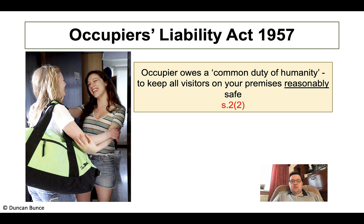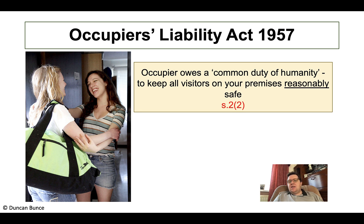Starting with the 1957 Act, the starting point is what is often called the common duty of care. Because this law is statutory, you need to be aware of section numbers. Under Section 2, Subsection 2 of the 1957 Act, this common duty simply means the defendant has to keep all visitors on their premises reasonably safe. The key thing is it's not expected that they have to keep them absolutely safe from every eventuality — it doesn't mean eliminate all dangers.